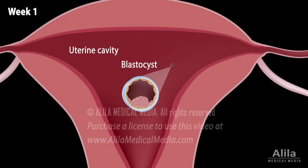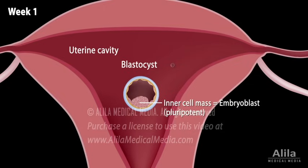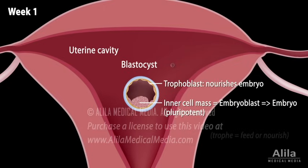The blastocyst consists of a pluripotent inner cell mass called the embryoblast, destined to be the embryo, and an outer shell called the trophoblast, which nourishes the embryo. The trophoblast later becomes the chorion, the fetal portion of the placenta.